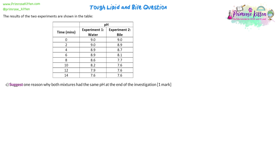Part c asks: suggest one reason why both mixtures have the same pH at the end of the investigation. A 'suggest' question is not necessarily something you were directly taught — you're using your knowledge, the evidence in front of you, and common sense based on what you can see in the question to think up an answer.